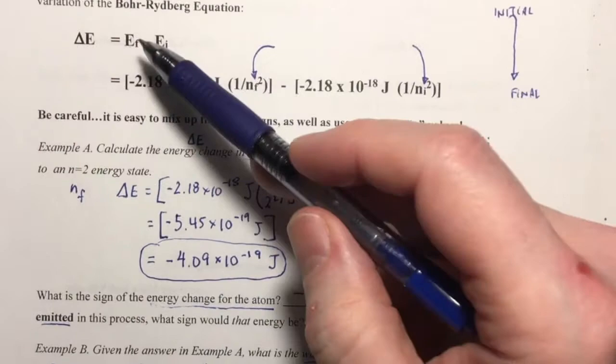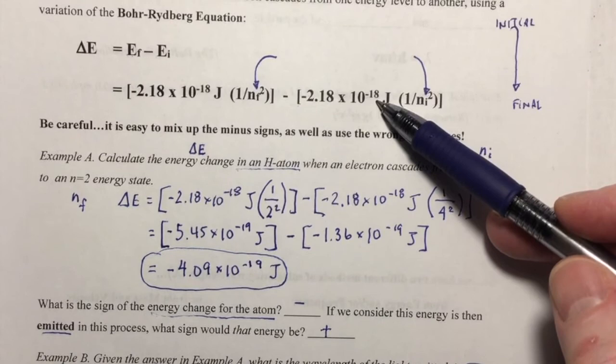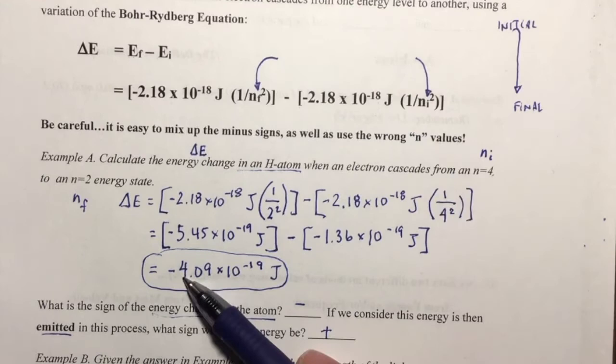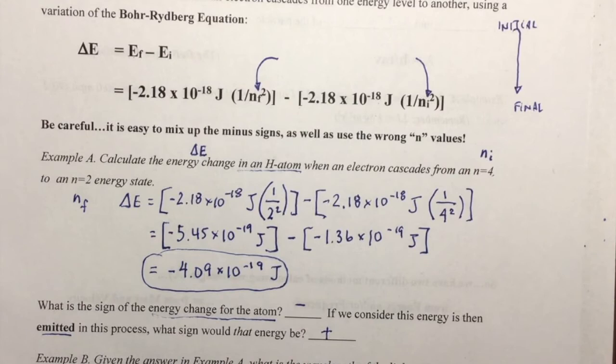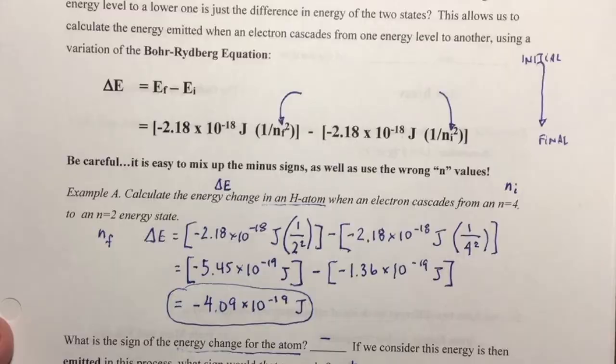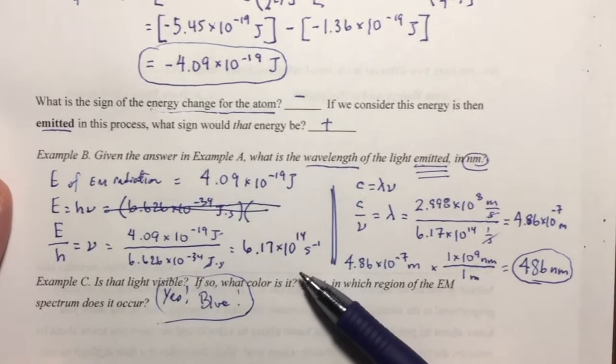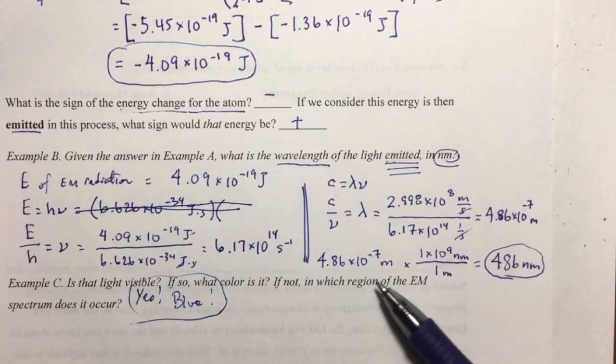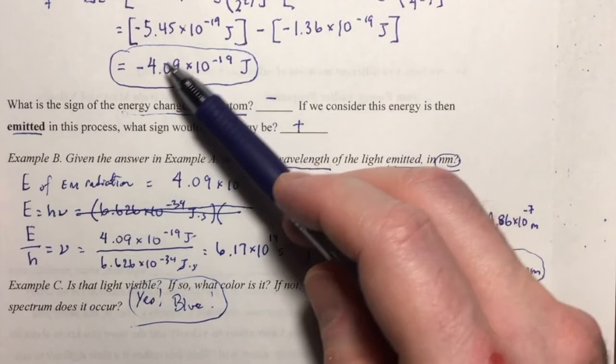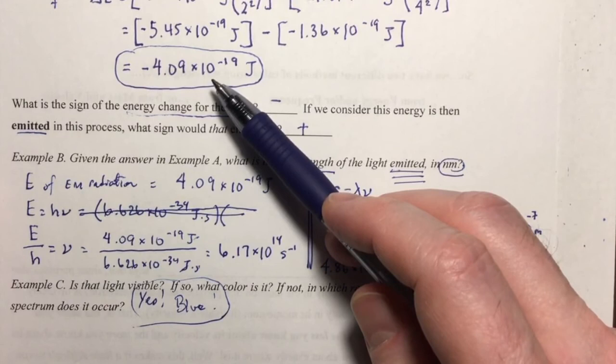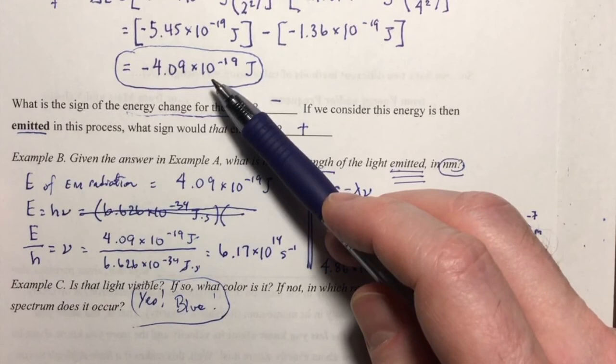This is how we calculate the difference in energy between two different electron levels. Once we calculate the energy change for the atom when an electron cascades, we convert it to a positive value — that positive value is the energy emitted into the universe. We then convert that energy into a frequency, that frequency into a wavelength, and if needed convert the wavelength from meters into nanometers. The energy change in an atom when an electron relaxes results in electromagnetic radiation that is sometimes visible.